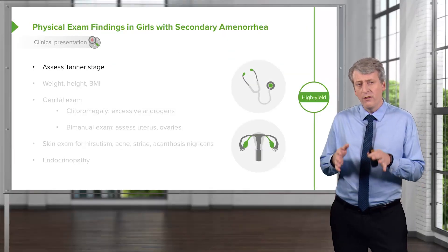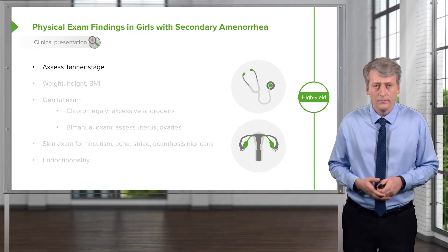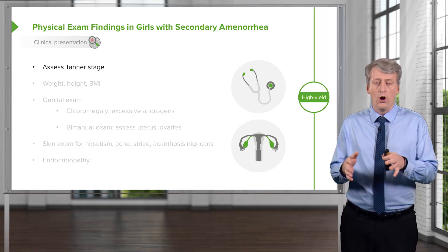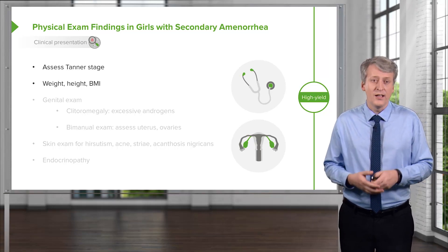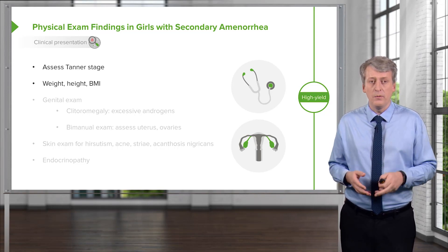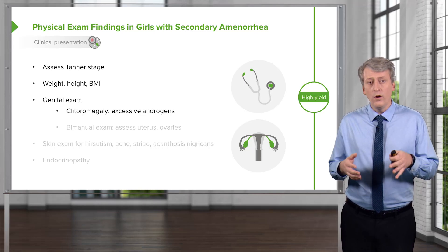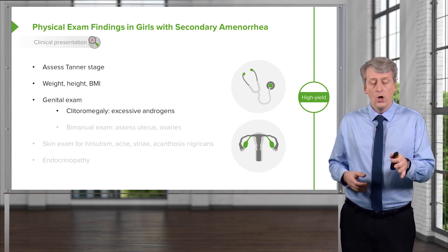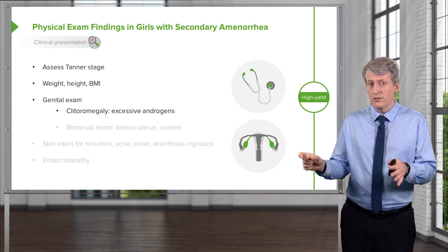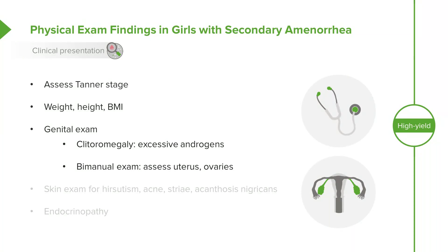On physical exam in a girl with secondary amenorrhea, assess the Tanner stage and pubertal development. Assess height, weight, and BMI, especially in a thin-appearing girl. Perform a genital exam checking for clitoromegaly, which may result from excess androgens like testosterone, and a bimanual exam to assess the shape and tenderness of the uterus and ovaries. Check for hirsutism, acne, striae, or acanthosis nigricans, and think about endocrinopathy — check the thyroid.